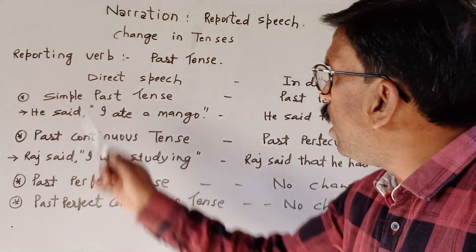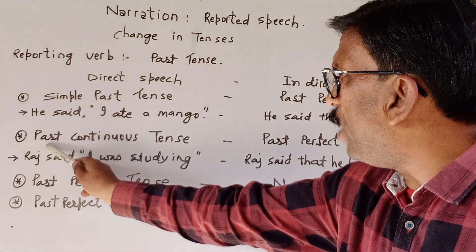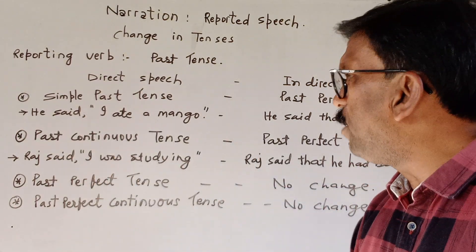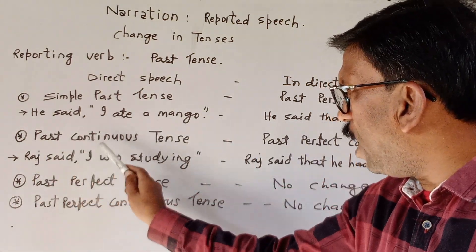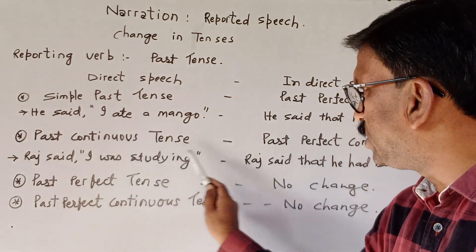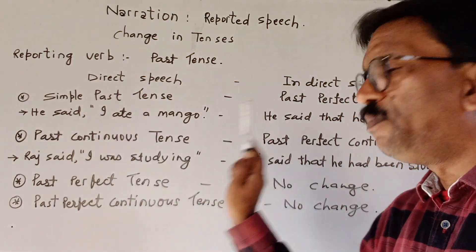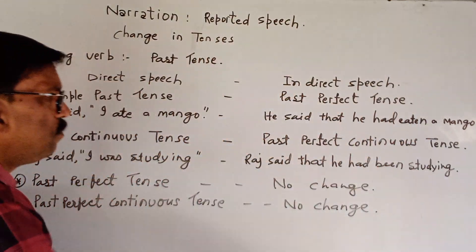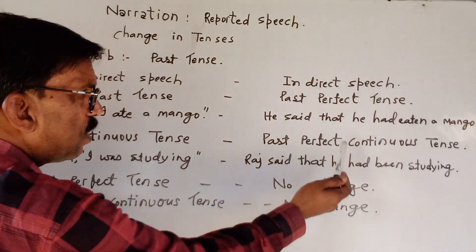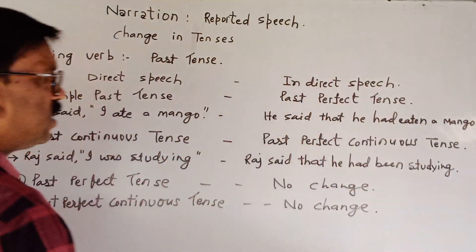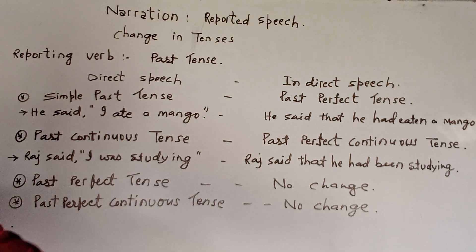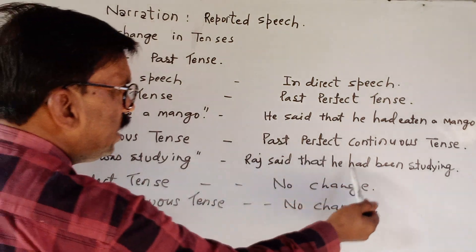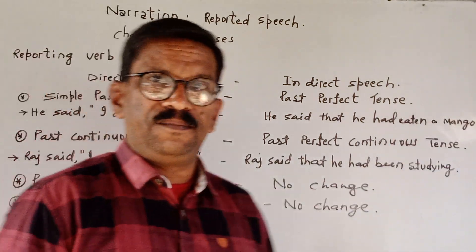If in direct speech there is a past continuous tense, for example 'Raj said I was studying' — 'I was studying' being past continuous tense — then we convert it to past perfect continuous tense in indirect speech, like 'Raj said that he had been studying.'